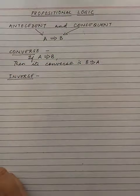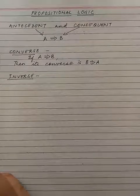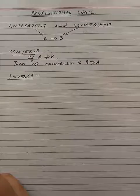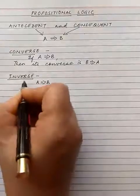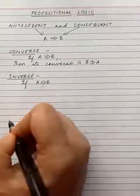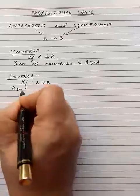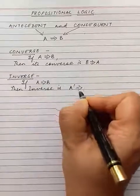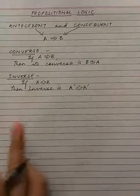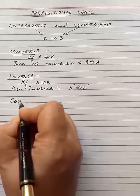Next is inverse. The inverse of a given conditional is a new conditional whose antecedent and consequent are the negations of the original conditional. If A implies B is the original condition, then its inverse is A-complement implies B-complement. This is called the inverse of the original condition.